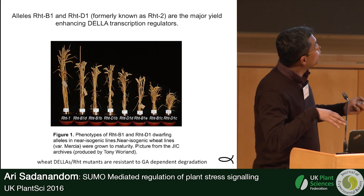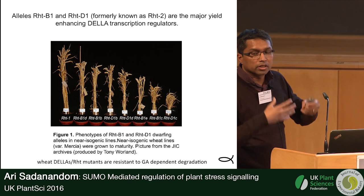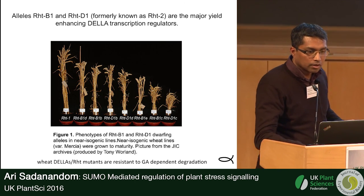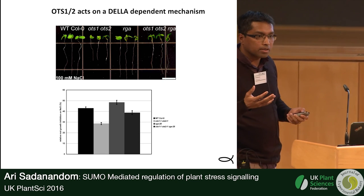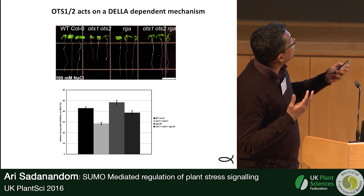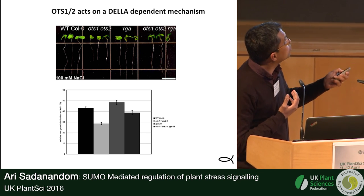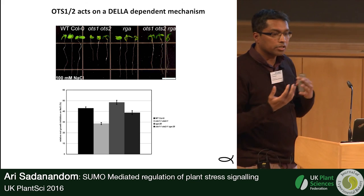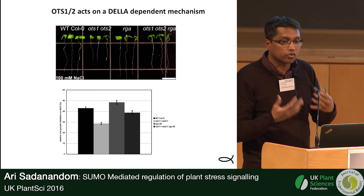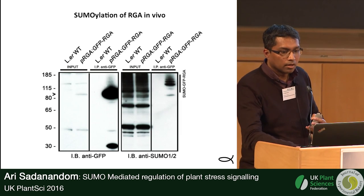The dwarf phenotype gives rise to more yield in terms of seed production and seed weight. When you cross the OTS double mutants — which are very sensitive to salt — with the rga DELLA mutant, you can start to restore growth. This shows that the OTS SUMO protease is working through a DELLA-dependent mechanism.